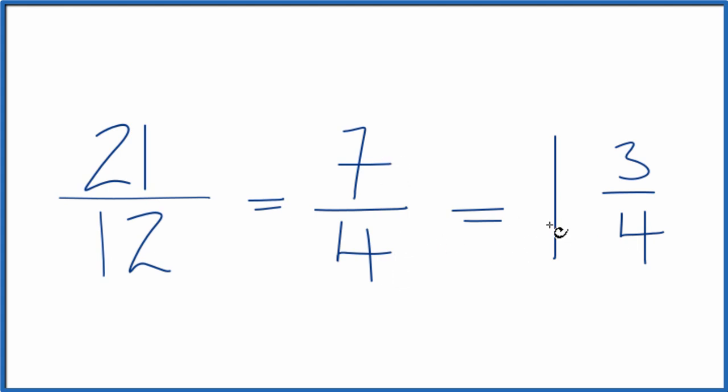And 7 fourths, you could write that as 1 and 3 fourths. You can check that. 1 times 4, that's 4. 4 plus 3, that's the 7. We just keep our denominator here the same.